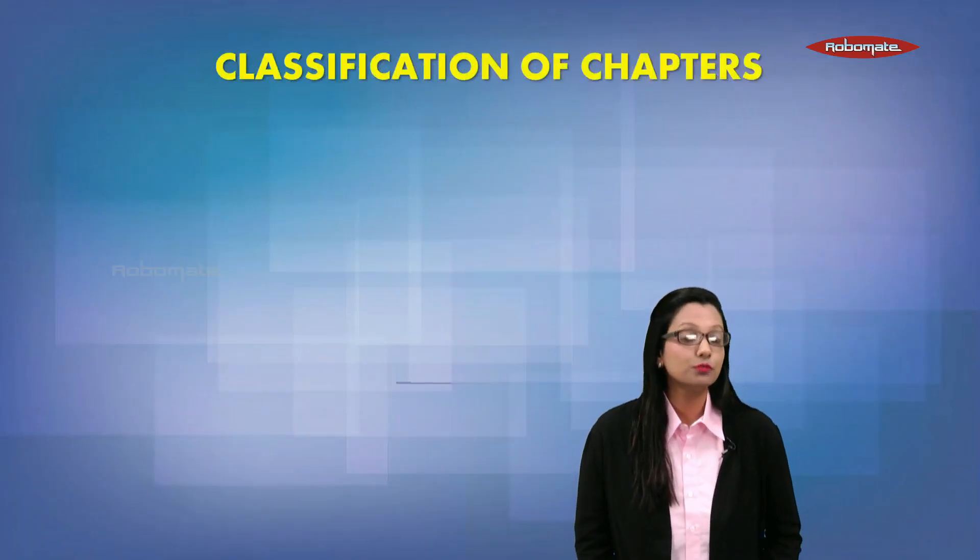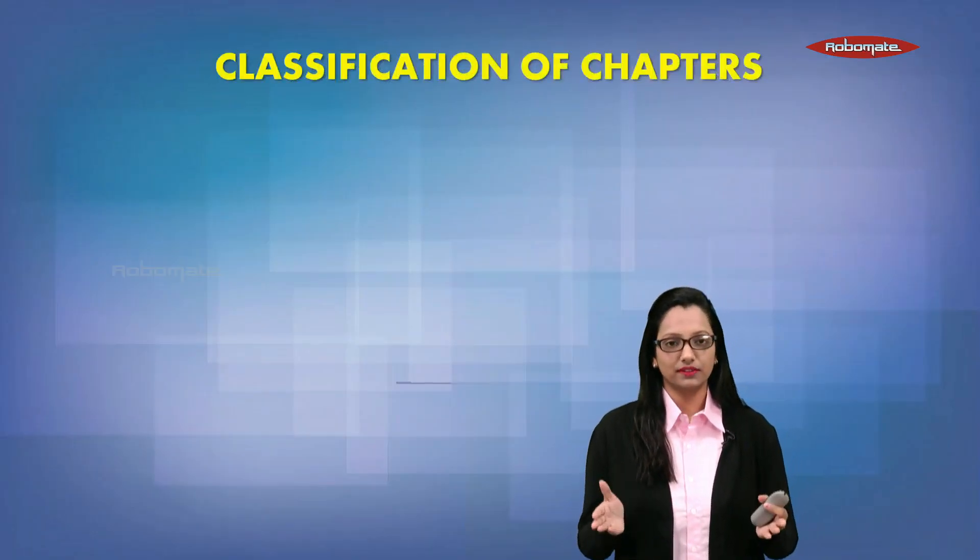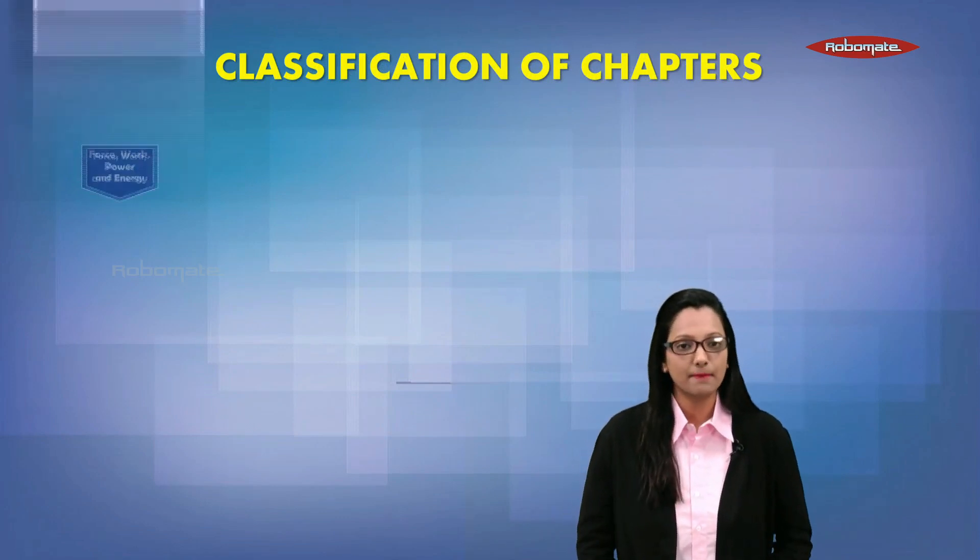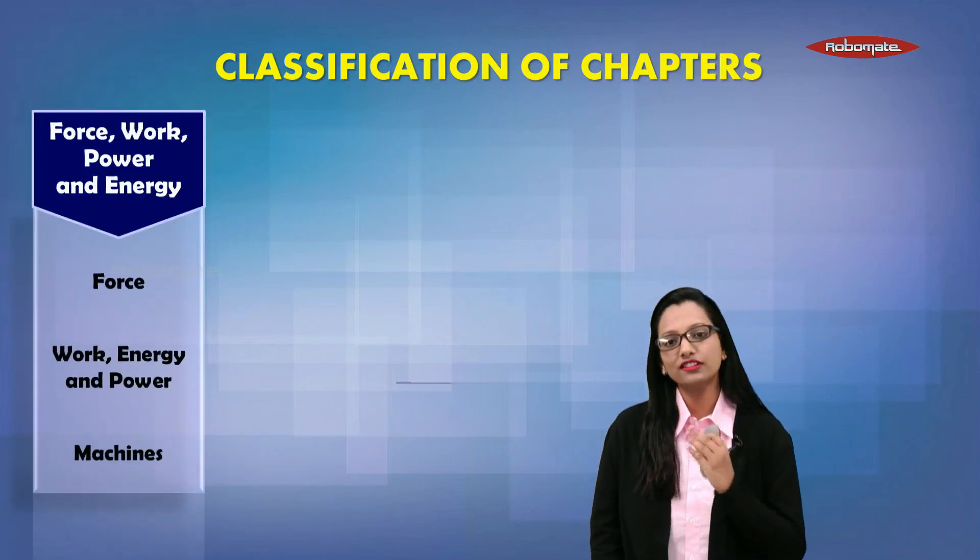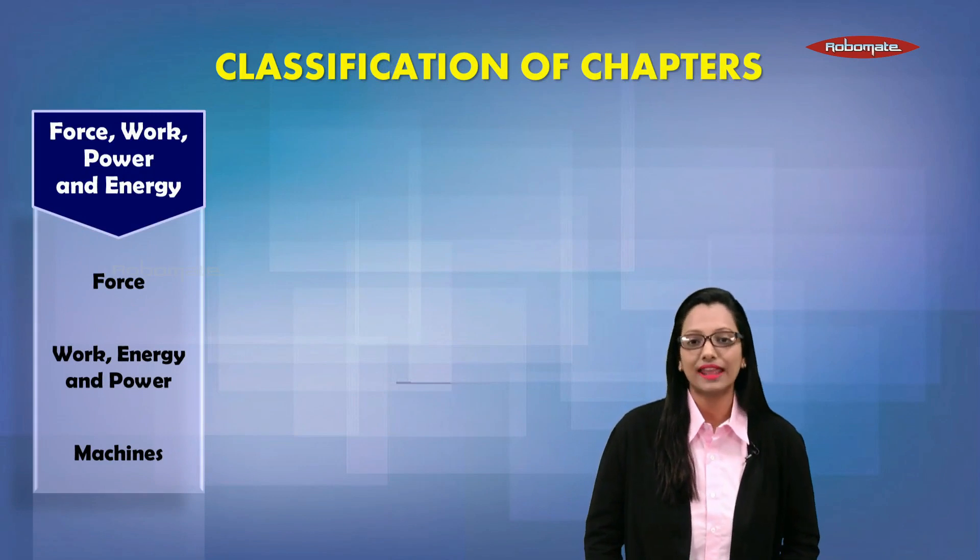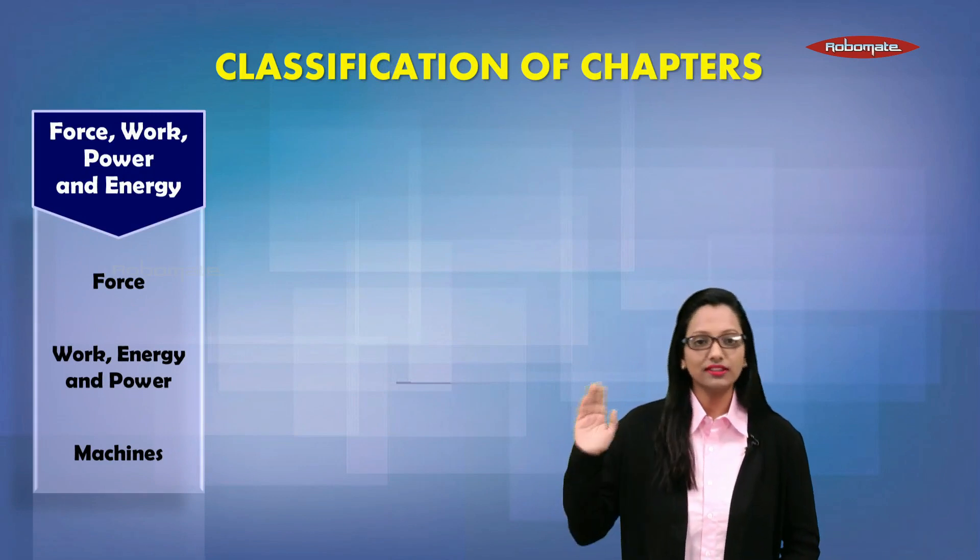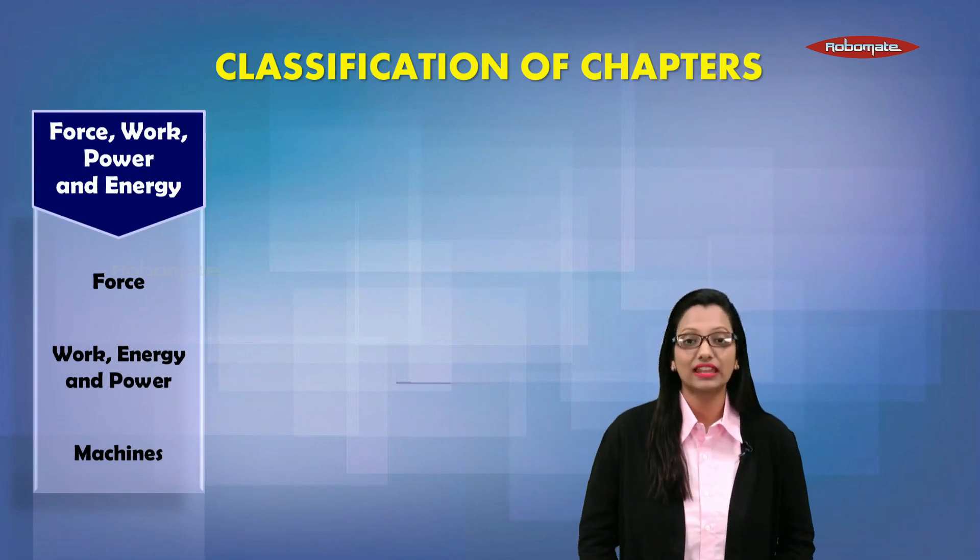So let us begin with a blueprint of your physics syllabus. The physics syllabus has been broken out into six major topics. The first topic has force, work, power, energy, and machines. This section is also called the mechanics section.